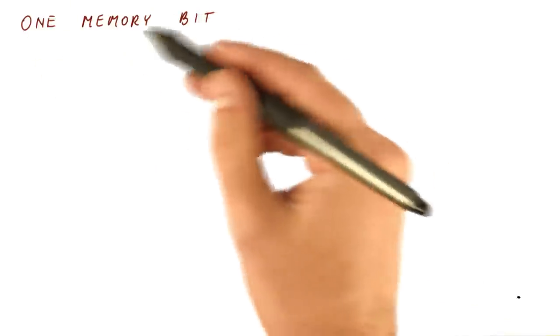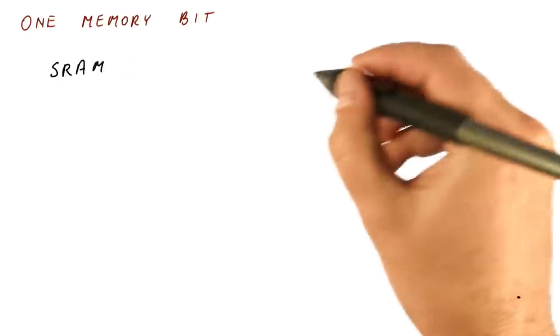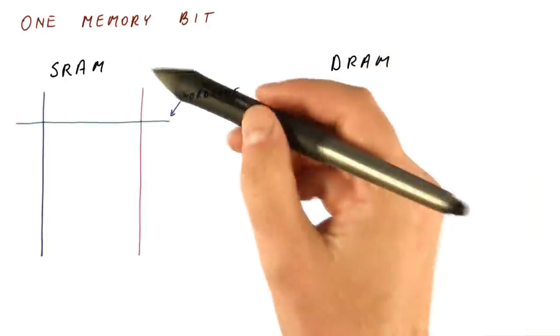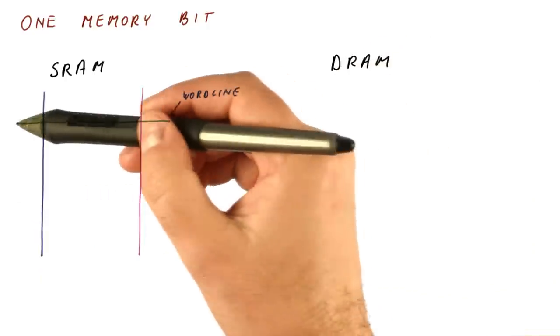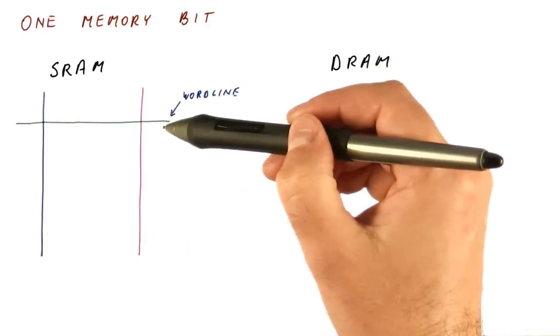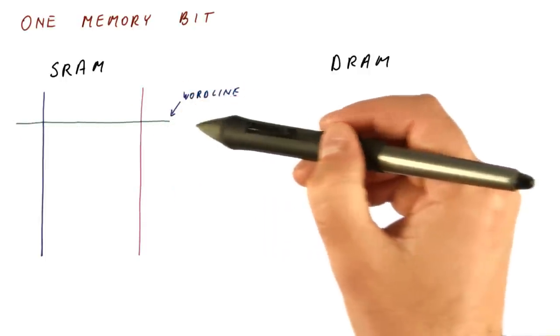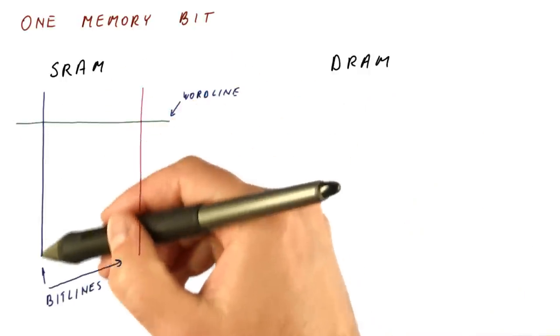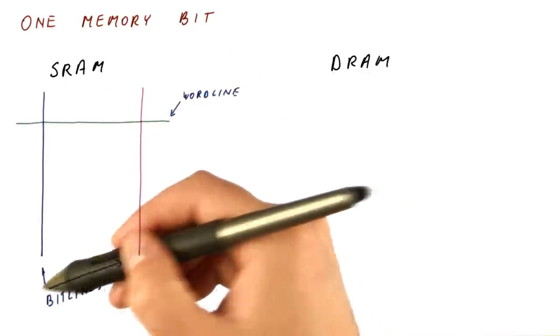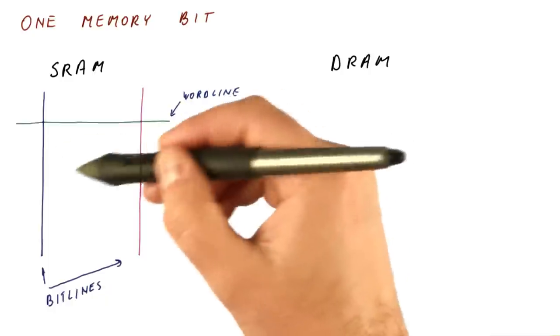So let's look at what one memory bit looks like in SRAM and DRAM technology. The bit sits at the intersection of a word line that passes by many bits, and a bit line that also passes by many bits. So a memory is a matrix of cells like this.